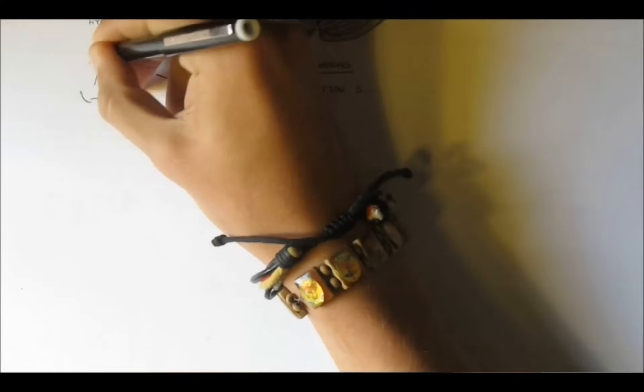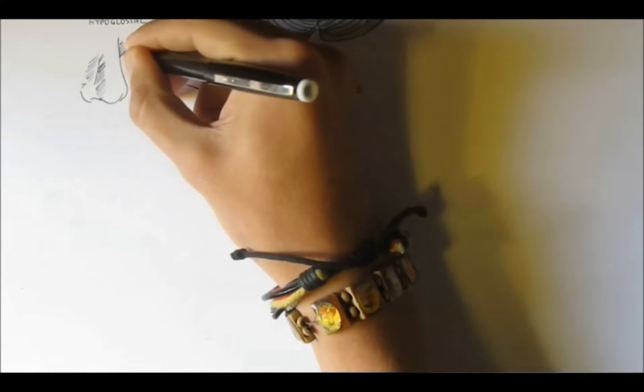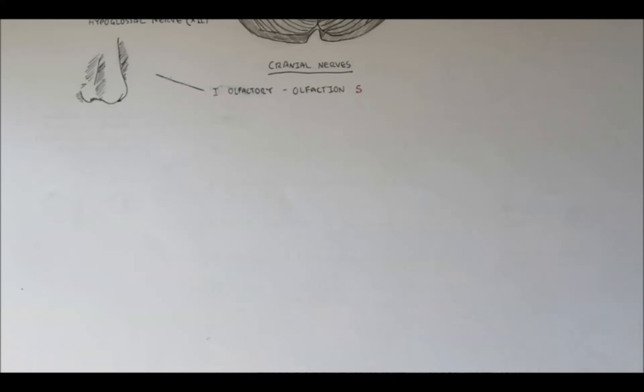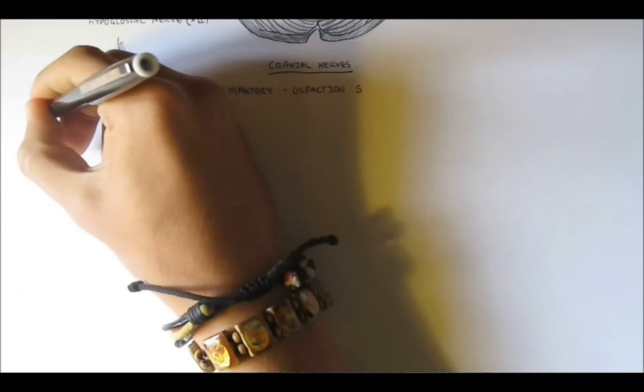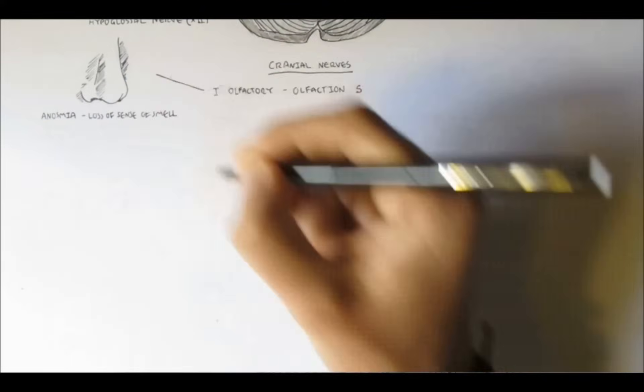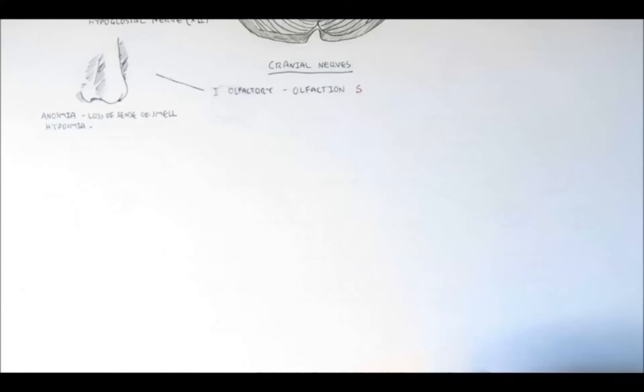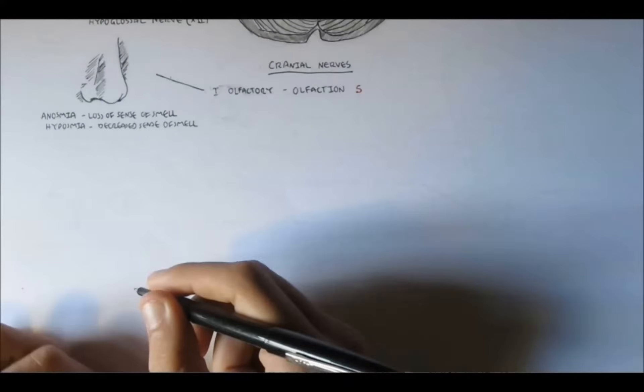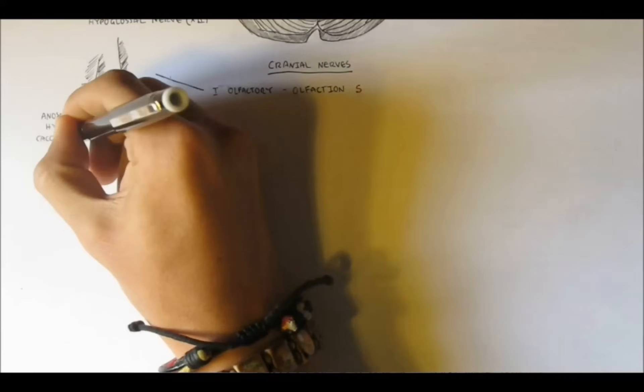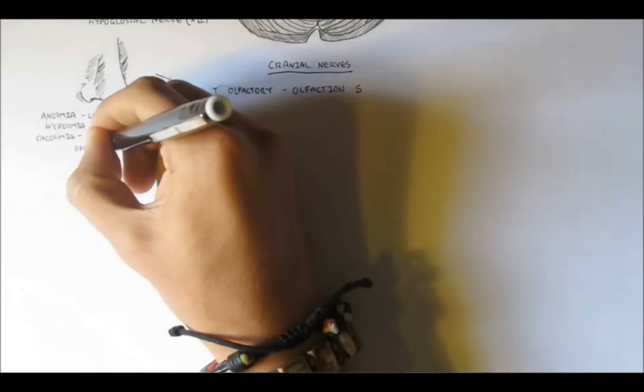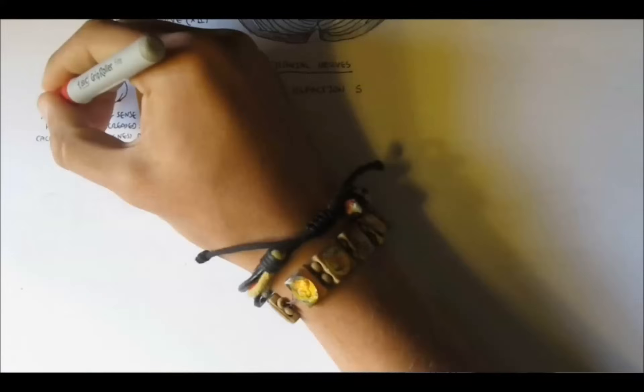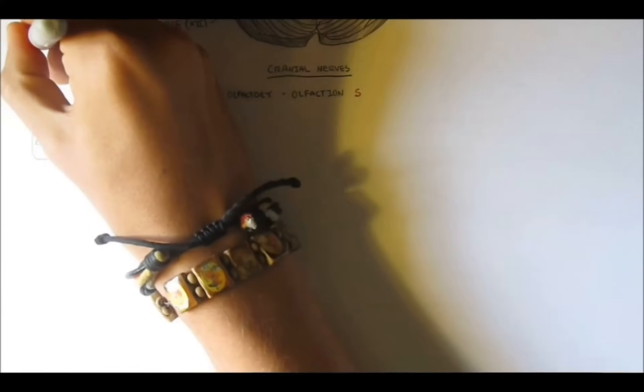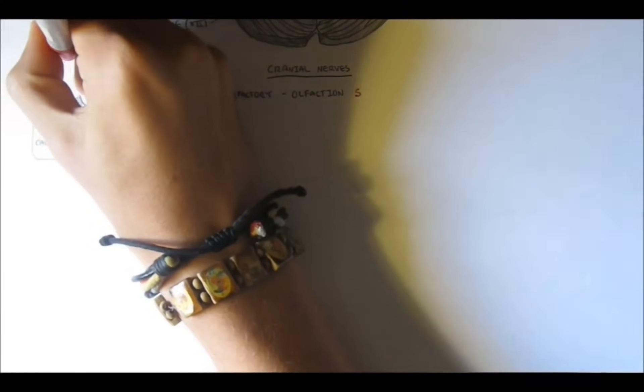Damage to the olfactory nerve can cause a symptom known as anosmia. Now, anosmia is the loss of sense of smell. And damage to the olfactory nerve can also cause hyposmia, which is decreased sense of smell, and also cacosmia, which is awareness of a defensive odor. Cacosmia basically means that the person always smells something bad, which would be terrible. Causes to damage this nerve can be from trauma and meningitis.